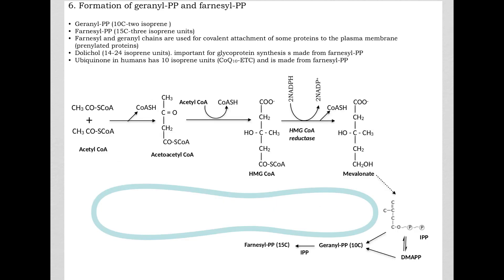In the next step, one IPP and one DMAPP will react with one another to form geranyl pyrophosphate. So notice this is five carbons. DMAPP is also five carbons. So joining the two together gives us a 10-carbon intermediate called geranyl pyrophosphate. And in the next step, another IPP will react with the geranyl pyrophosphate to give us farnesyl pyrophosphate. So 10 carbons here, five carbons here, that gives us 15-carbon intermediate called farnesyl pyrophosphate.